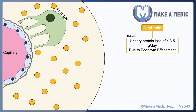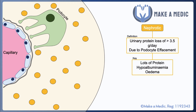One key point to remember about nephrotic syndrome is that the underlying mechanism is due to podocyte injury. Remember what we said earlier about how podocytes are important in compressing the glomerular basement membrane and allowing it to create a barrier to the passage of proteins into the filtrate. So if the foot processes of the podocytes are damaged, it means the kidney is less able to prevent protein leakage.